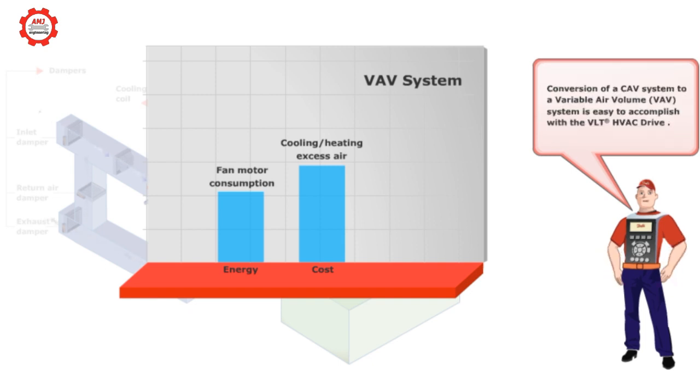Conversion of a CAV system to a variable air volume system is easy to accomplish with a VLT HVAC drive.